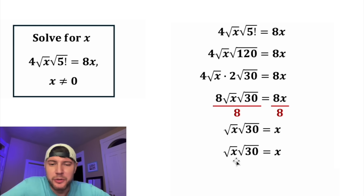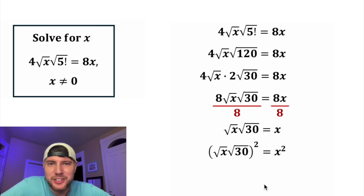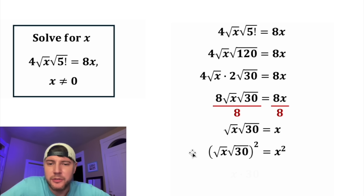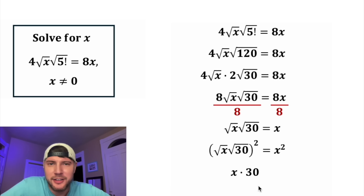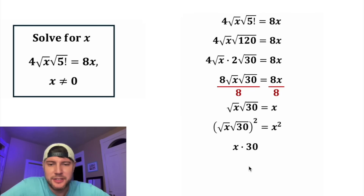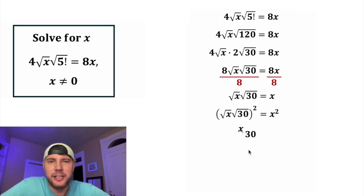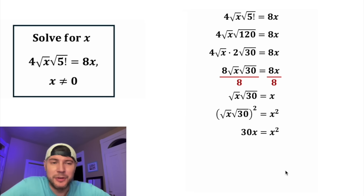Now to get rid of these square roots, let's square both sides of the equation. On the left-hand side, these square roots and the square will cancel each other out, so we're left with x times 30. Now we can rewrite this as 30x. And then on the right-hand side, we have x squared.